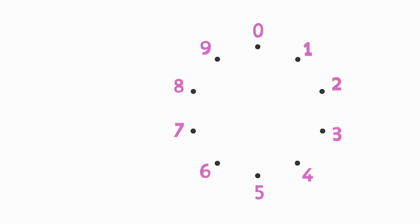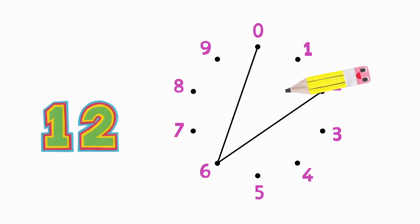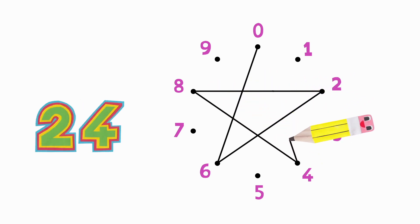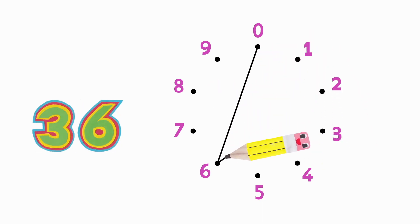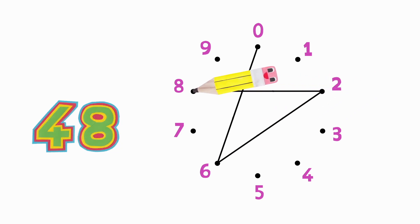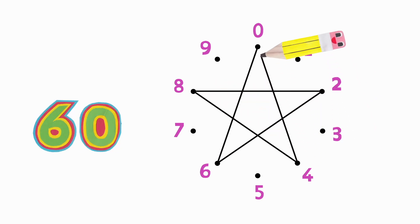Six times table. Six, twelve, eighteen, twenty-four, thirty, thirty-six, forty-two, forty-eight, fifty-four, sixty.